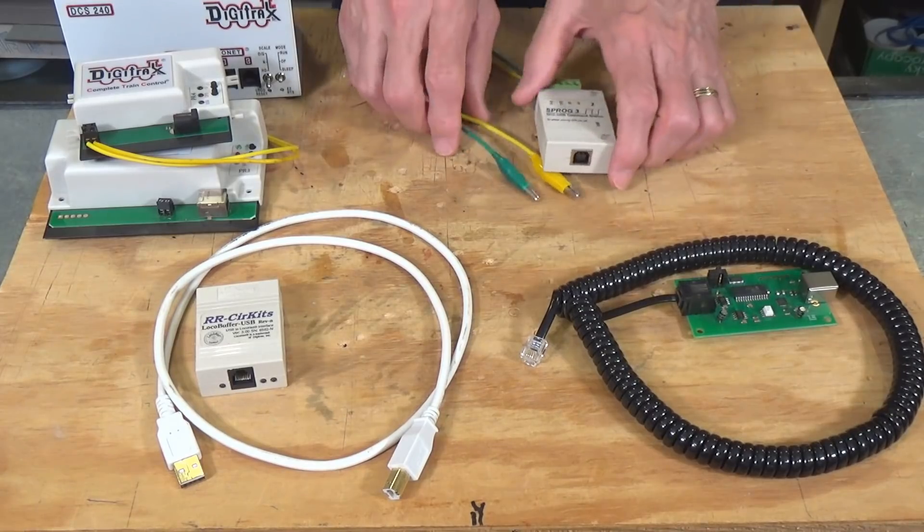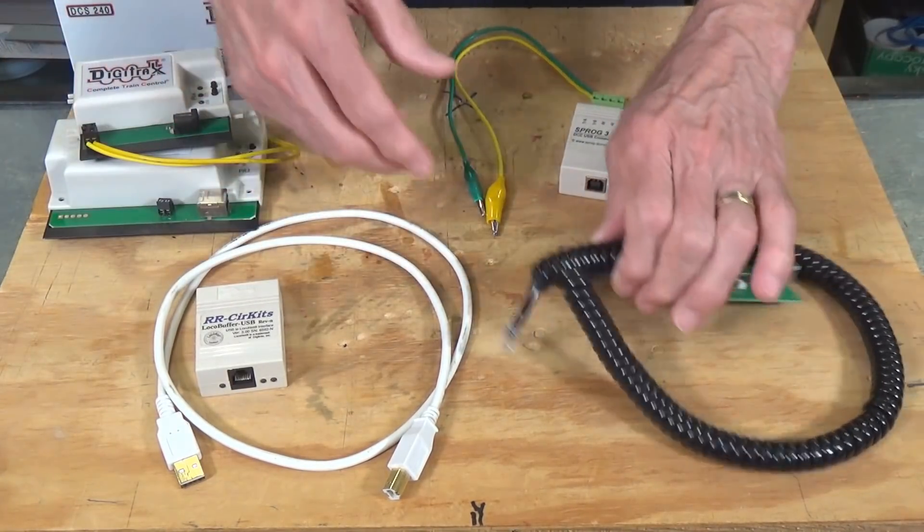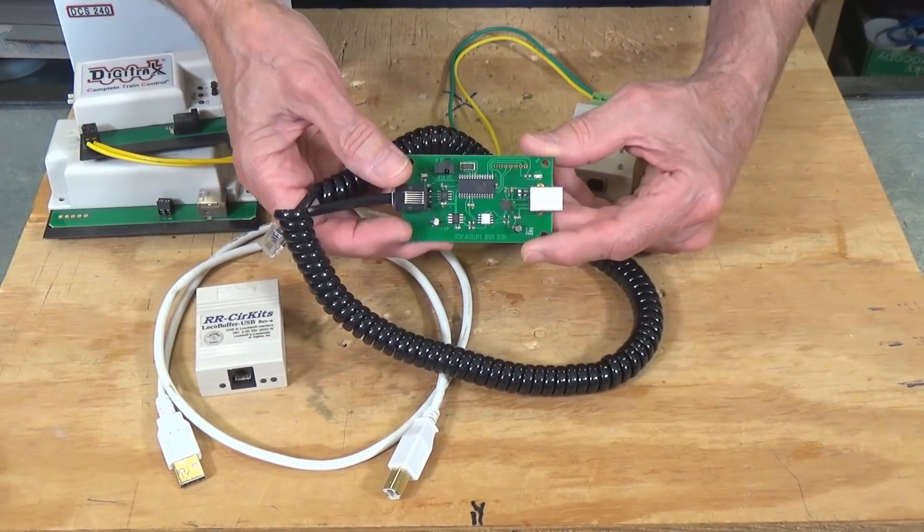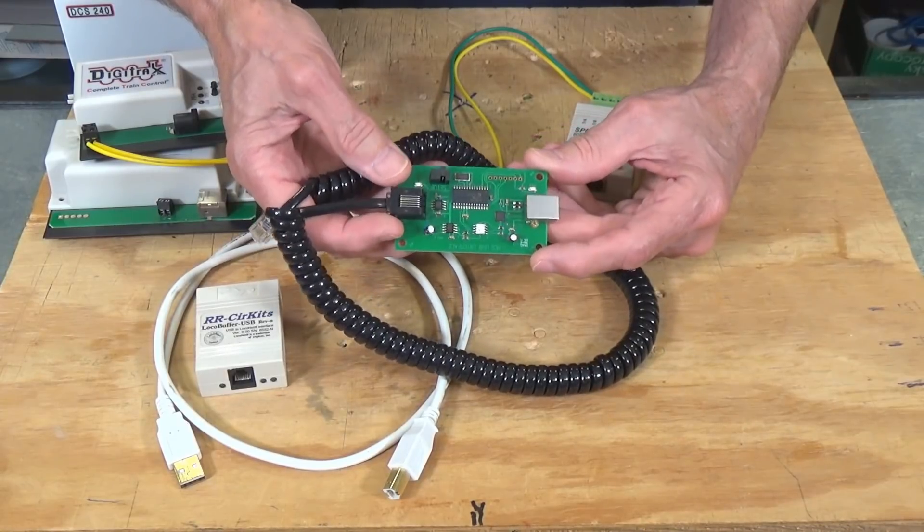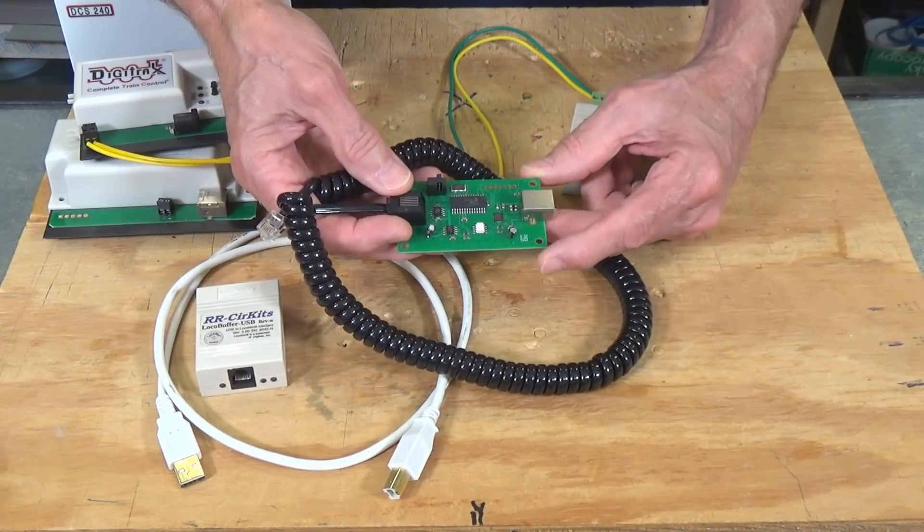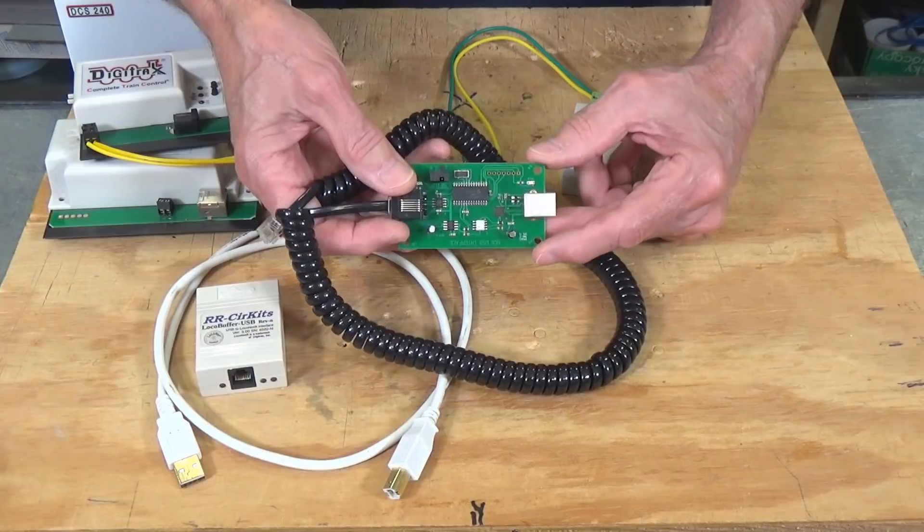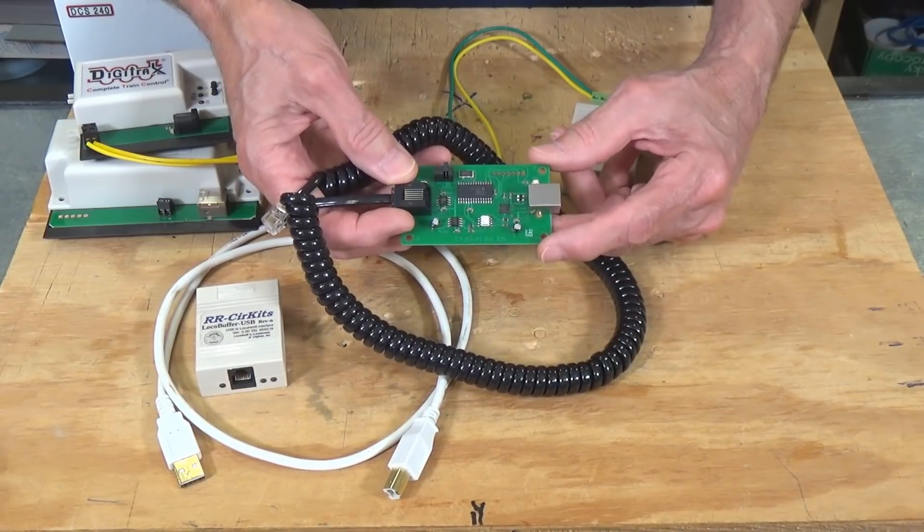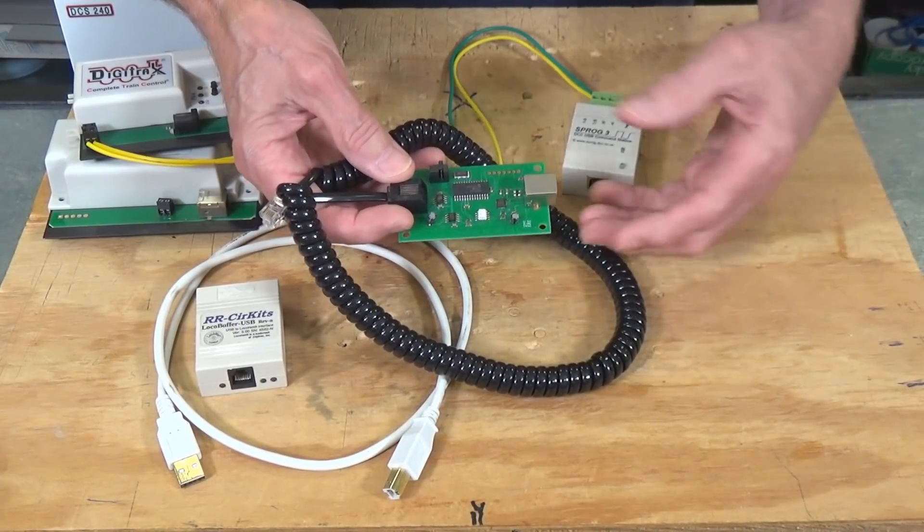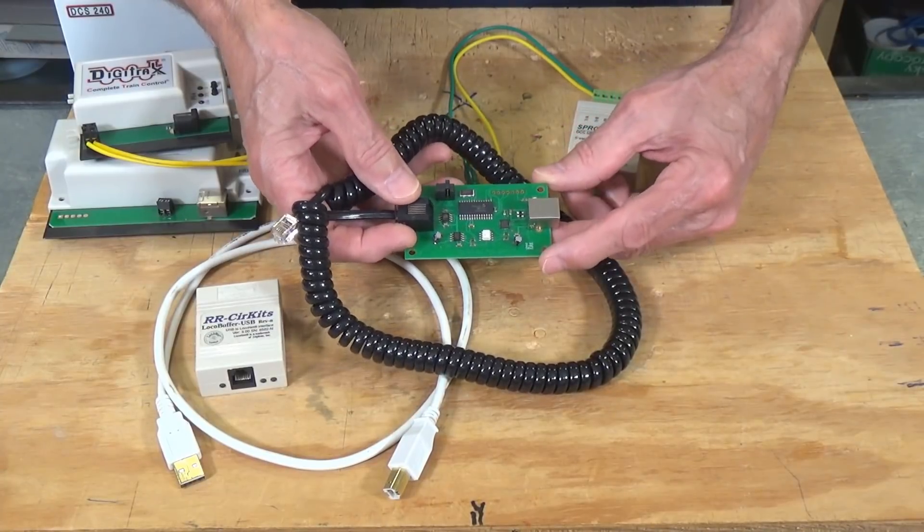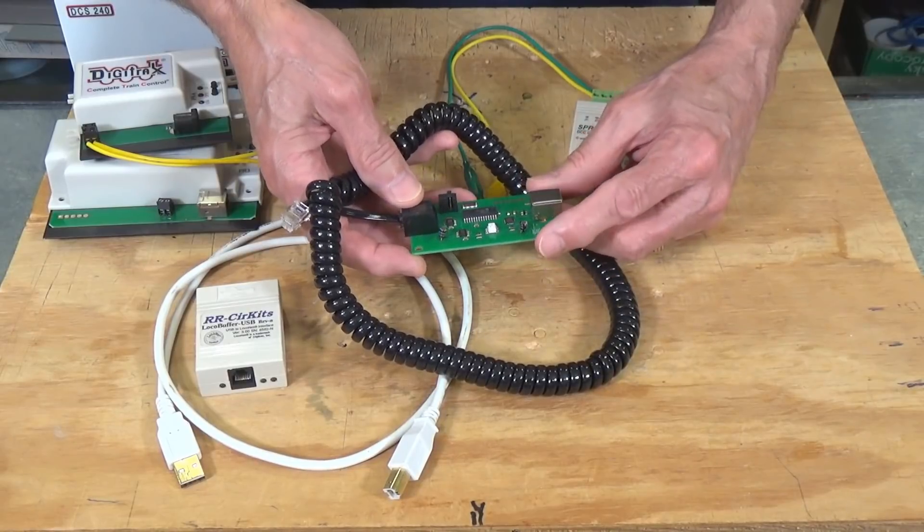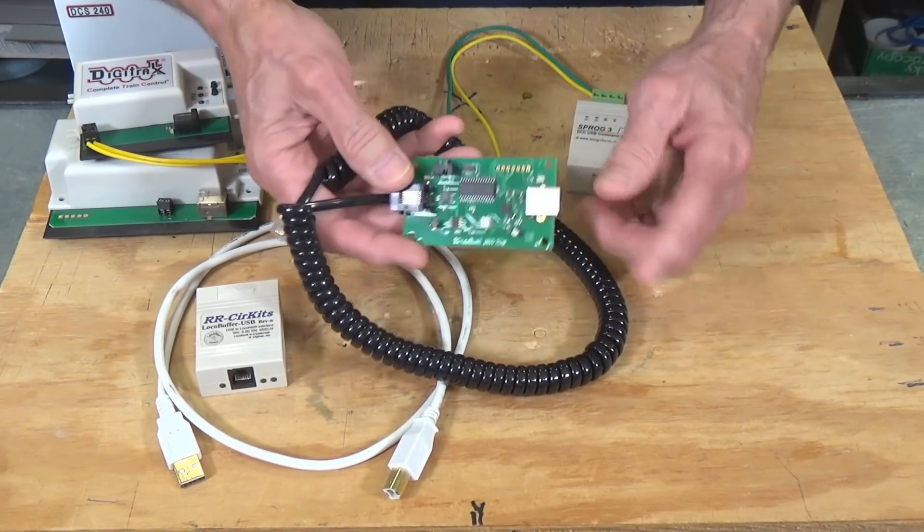Now let's take another look at a different one here. What I have here, this is the USB interface card for the NCE PowerCab and it works with some of their other units. Most of the big NCE command stations come with a serial interface built in. They've had that ever since the very beginning for about 25-30 years now. And because serial interfaces are not very common on computers now, they offer a serial to USB interface for your computer for use with that.